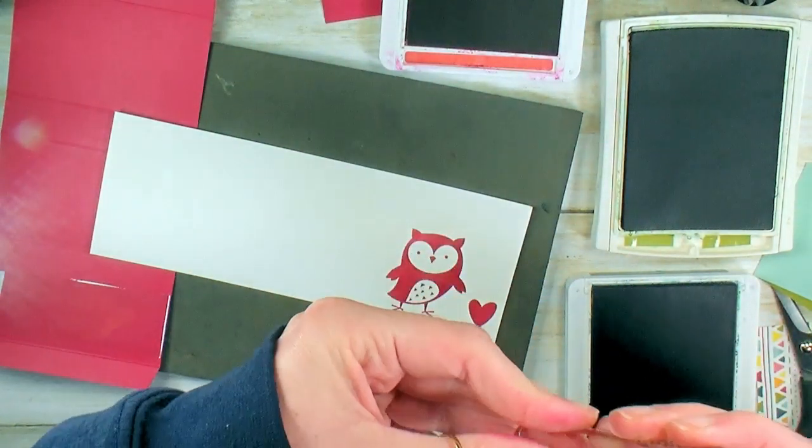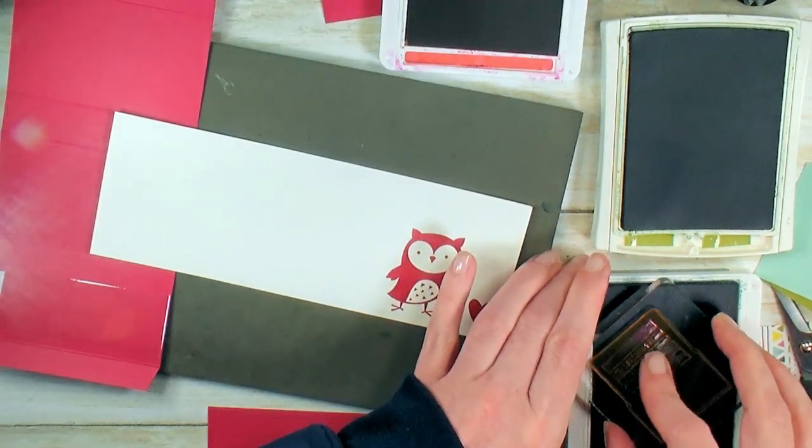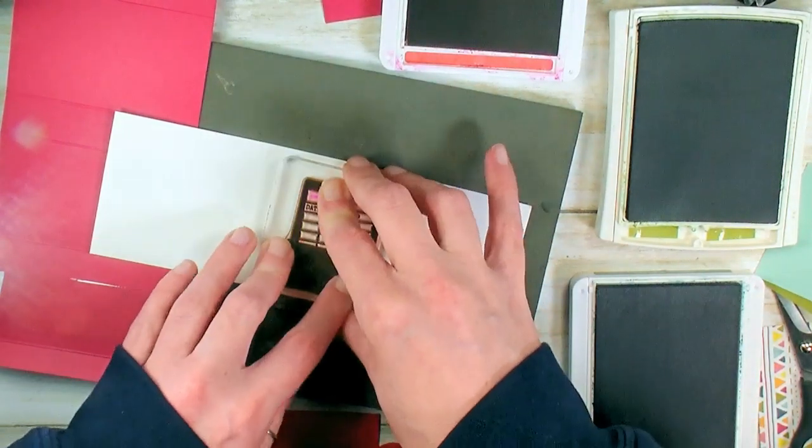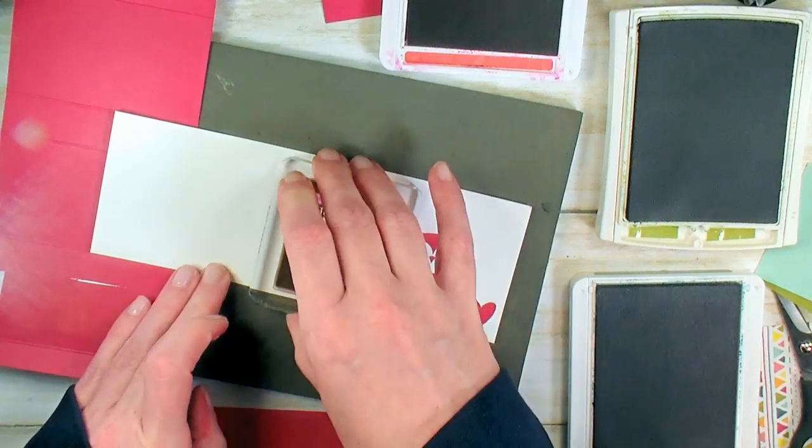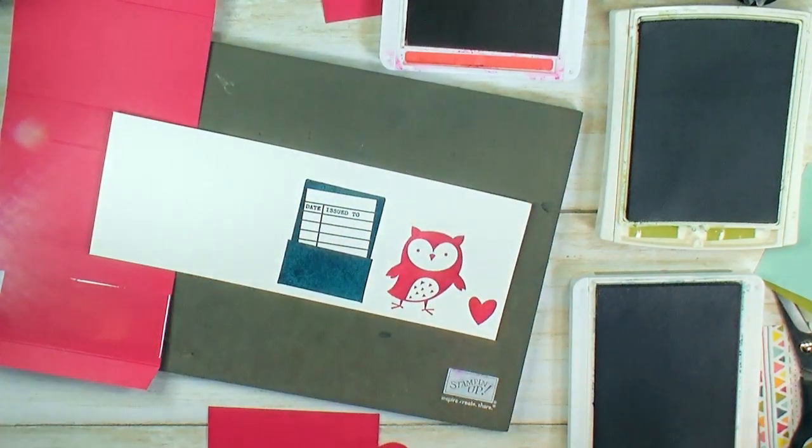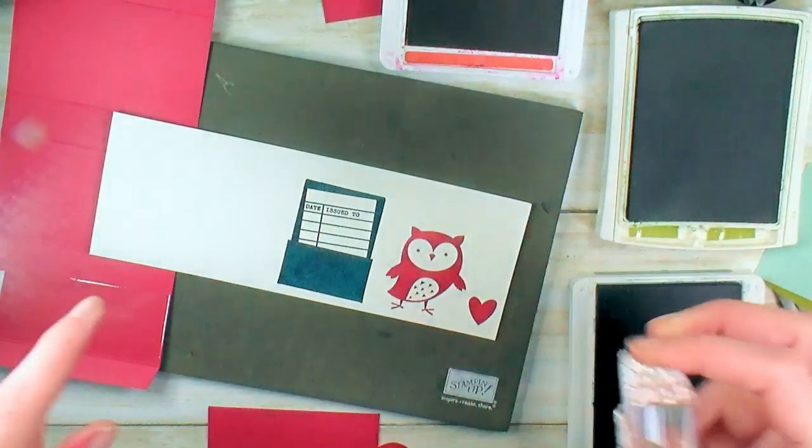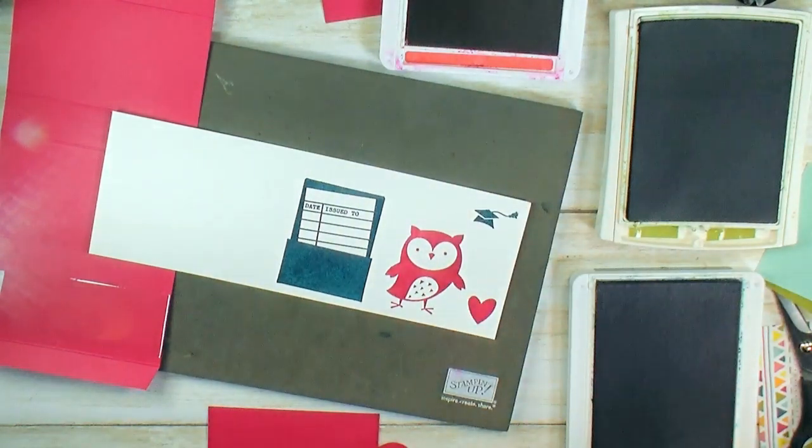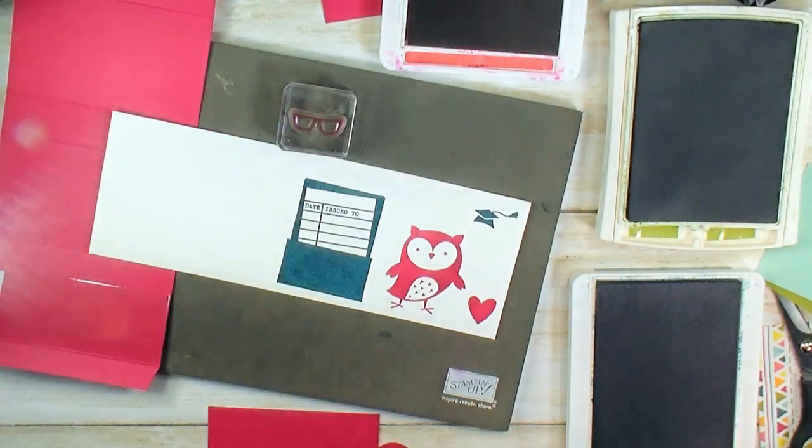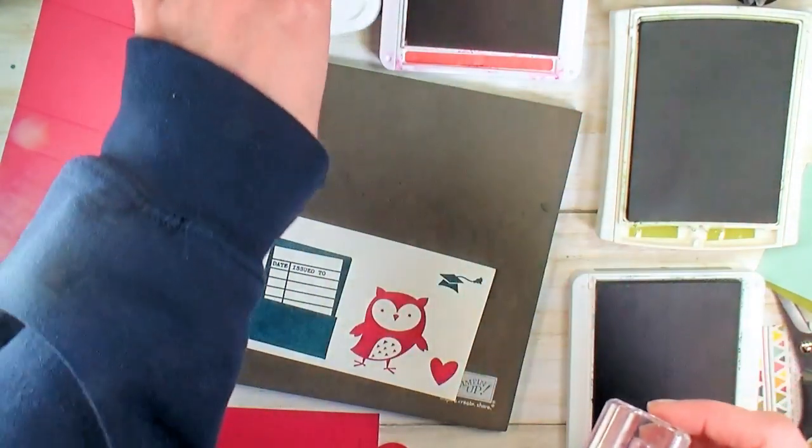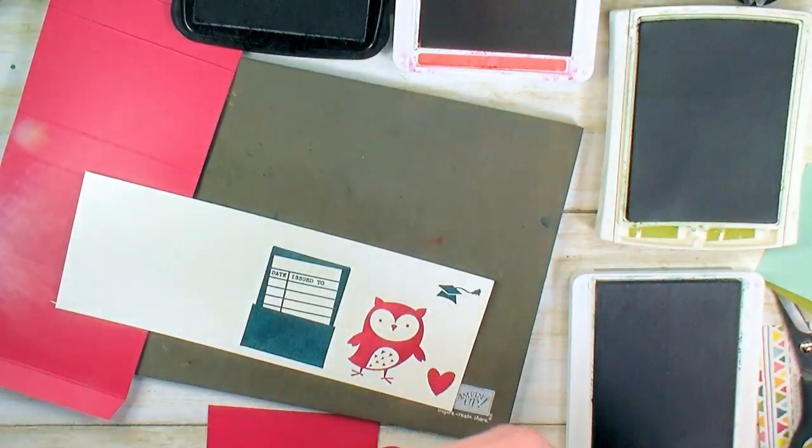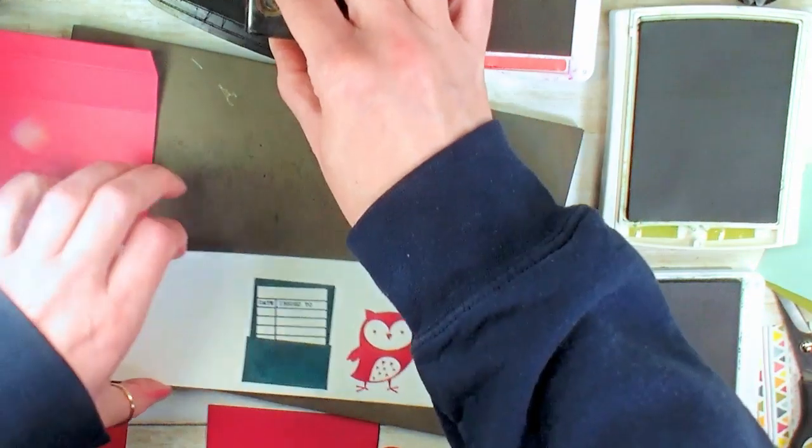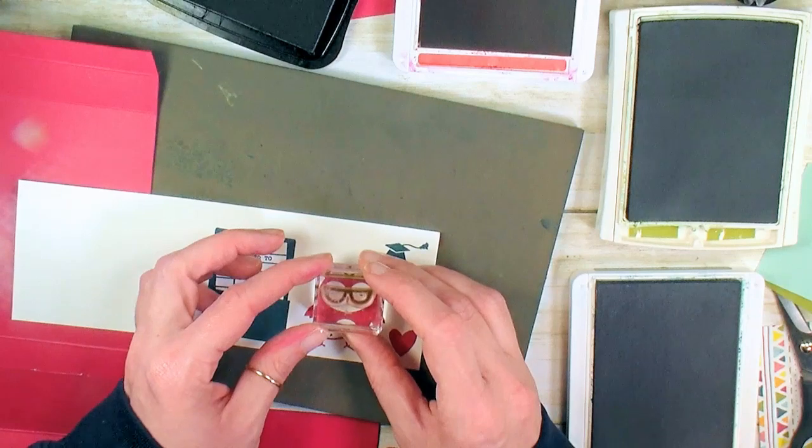Library card from Check You Out. We're going to ink that one up in Pretty Peacock. When you've got a solid image like this, give your ink a second to transfer. Take your time. Little graduation cap, more Pretty Peacock. Everything is from the Check You Out stamp set. I just love all the little images. We're pulling back in Memento Tuxedo Black here. We're going to ink up the little specks and add some scholarly glasses to our little owl. Is that not the cutest thing you ever saw?